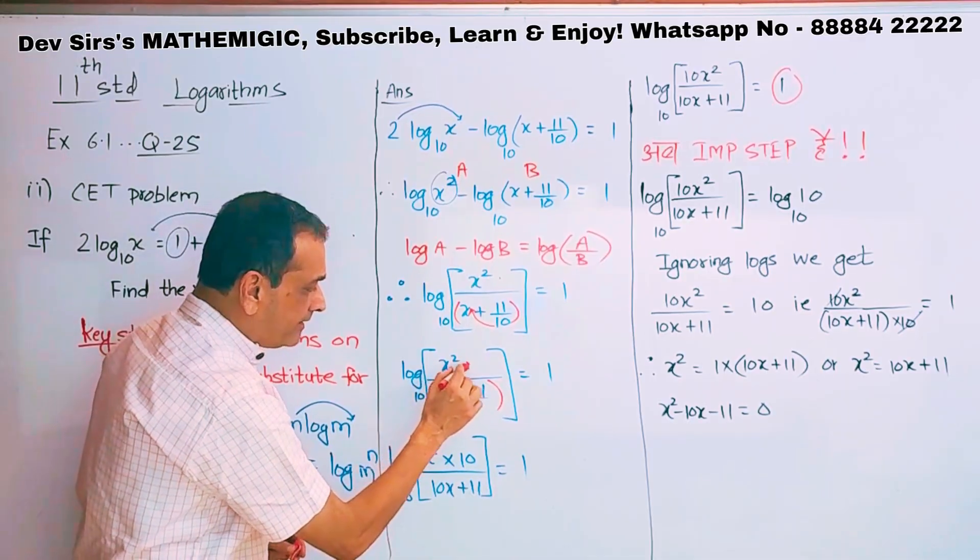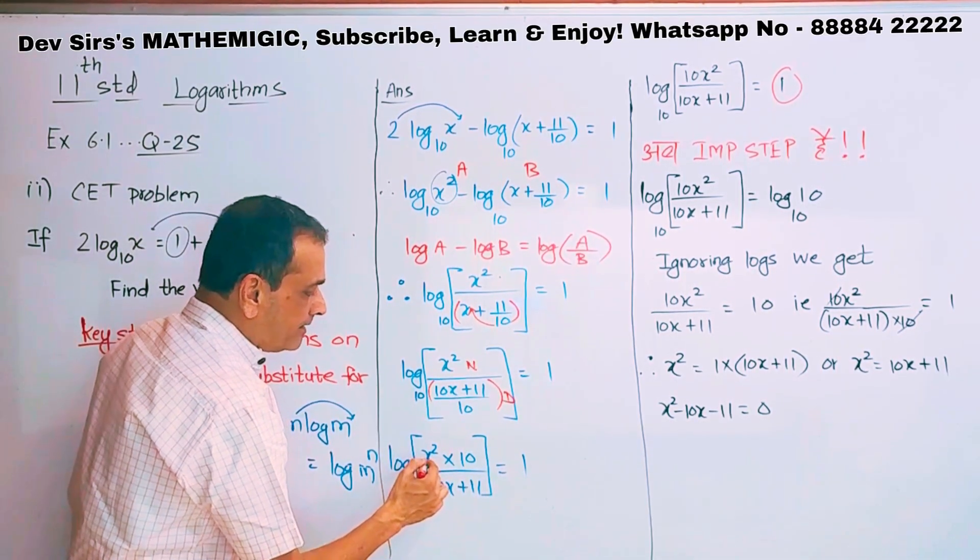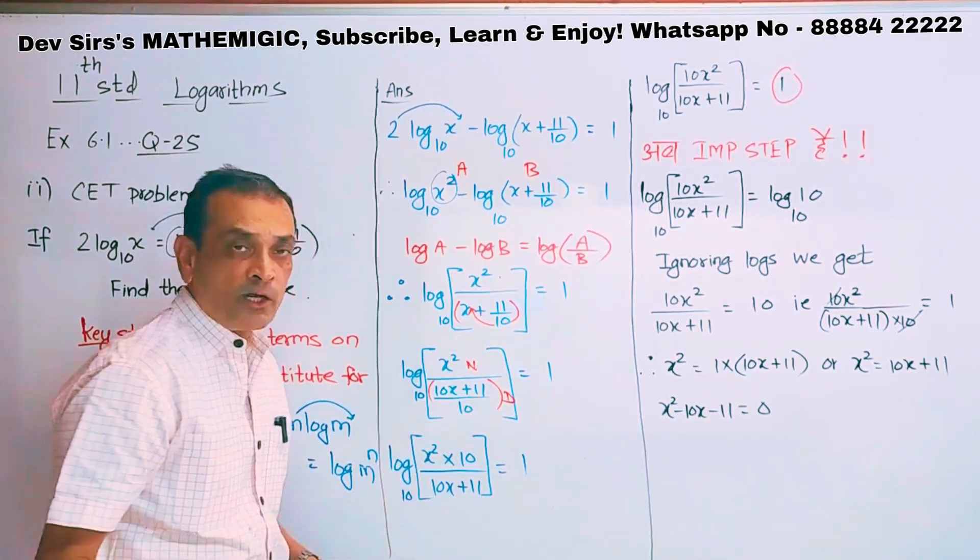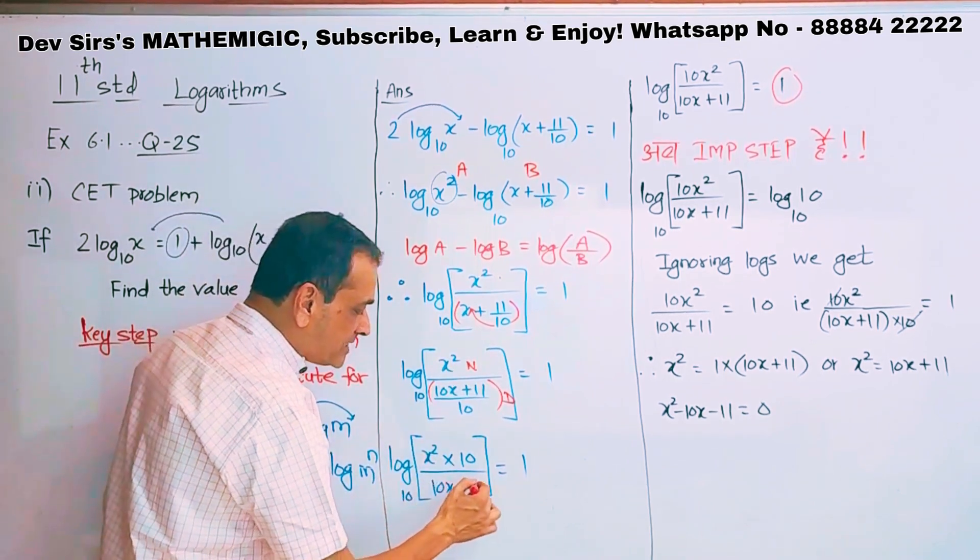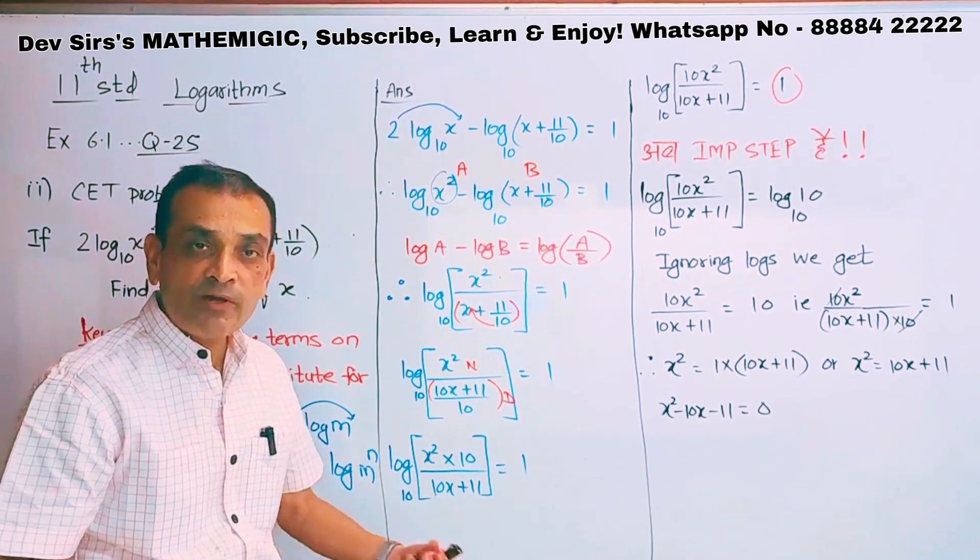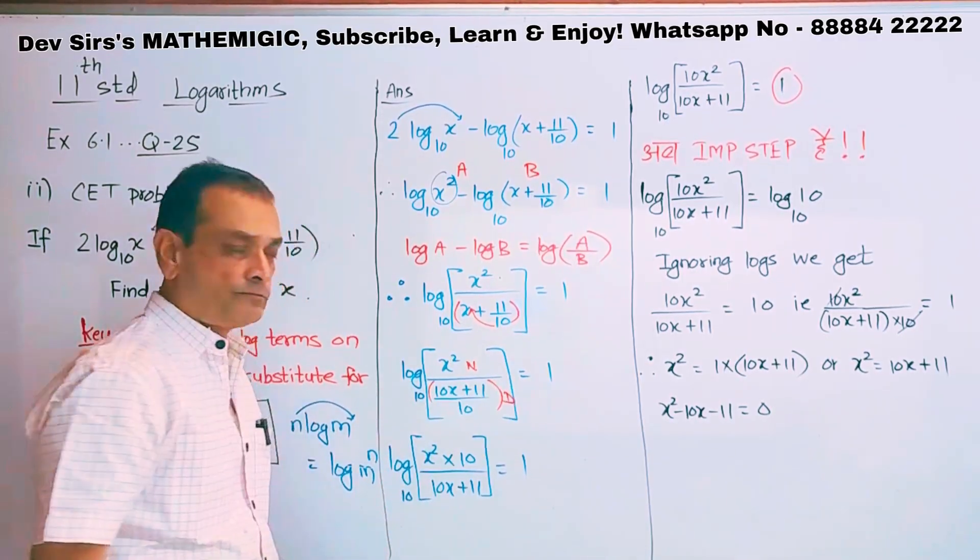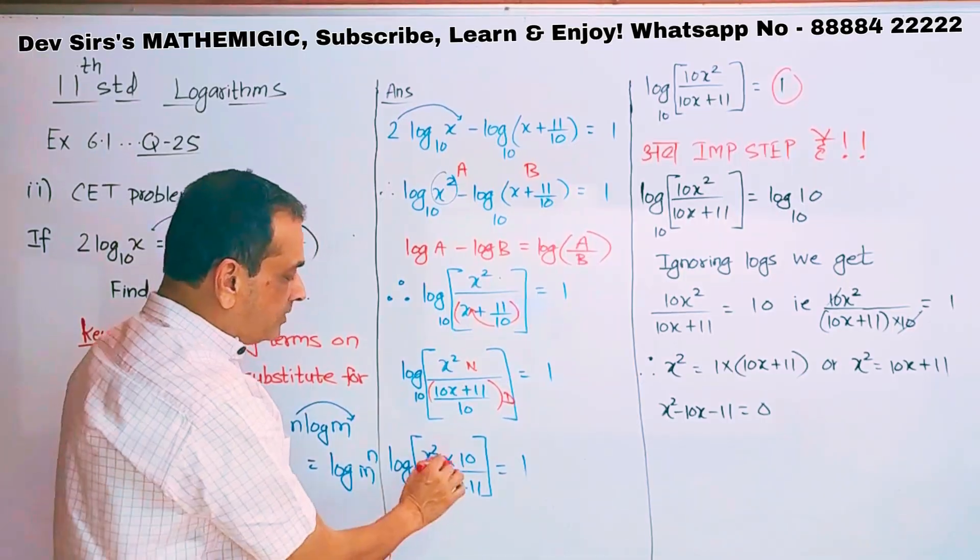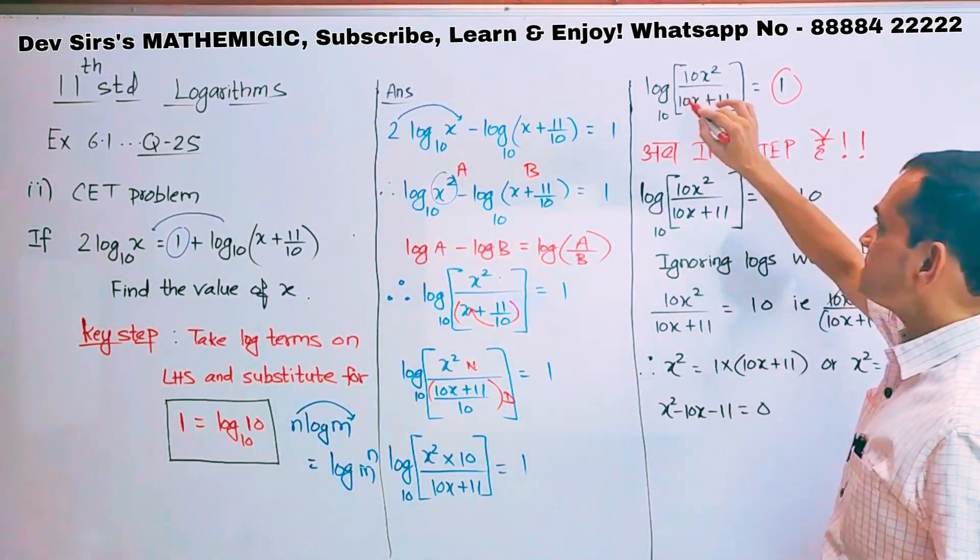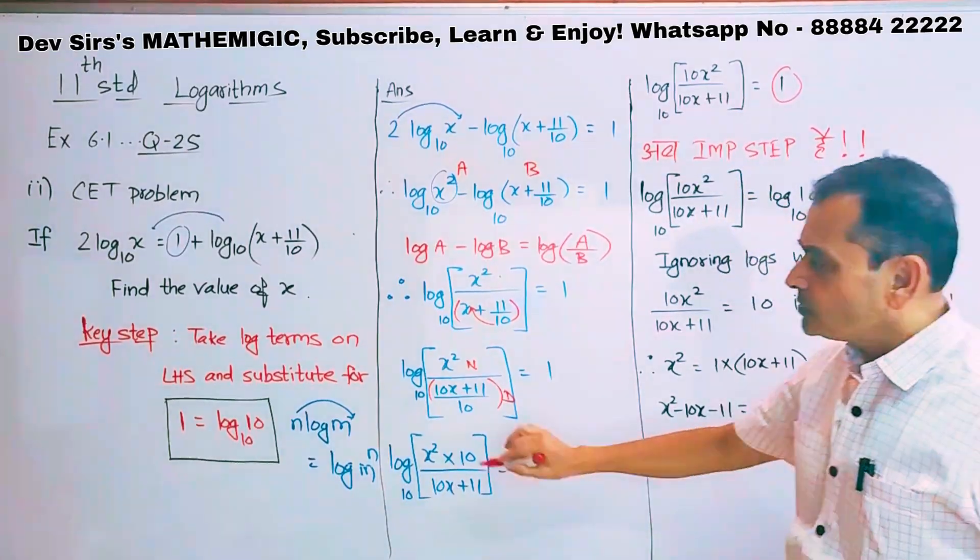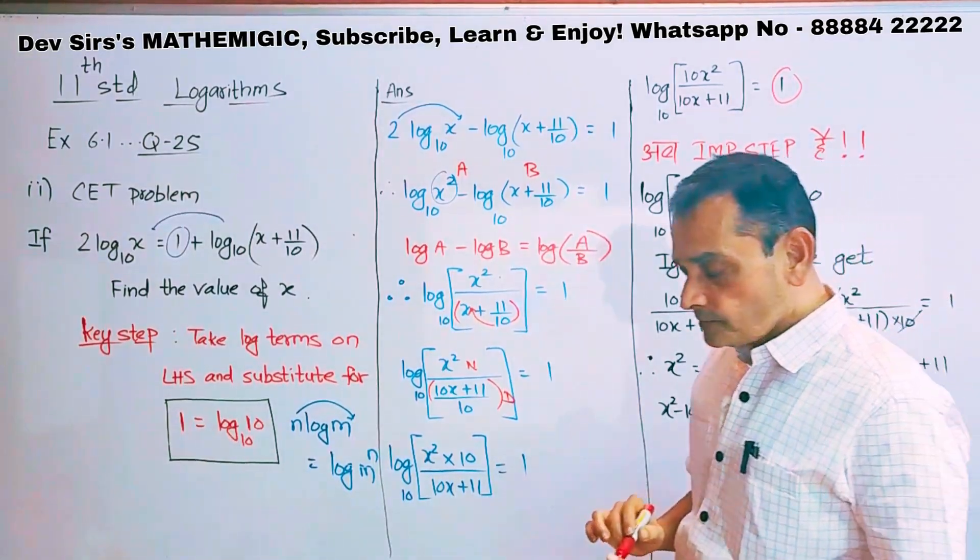Now after this, numerator into reciprocal of denominator. So x squared into 10 upon 10x plus 11, 10 goes up. Numerator is numerator, denominator is denominator, so numerator I kept as it is into reciprocal of denominator. So x squared into 10 upon 10x plus 11, I am just simplifying because no need to keep this division sign. Equal to 1. Now 10 into x squared is 10x squared upon 10x plus 11 to the base 10. Equal to 1.